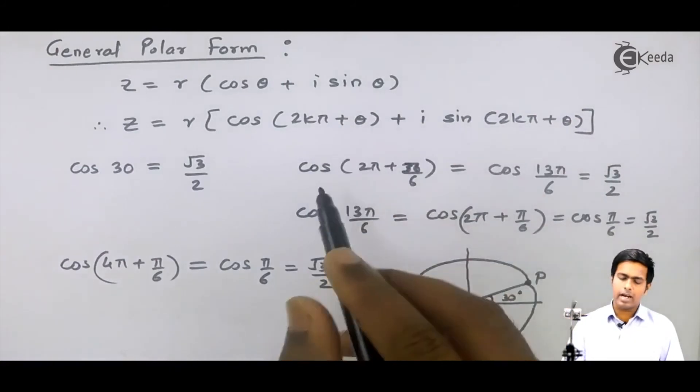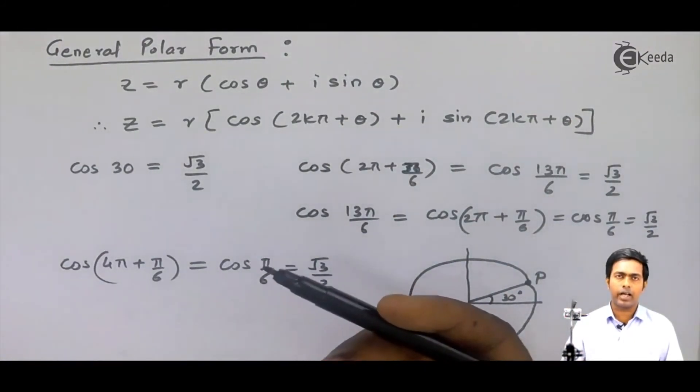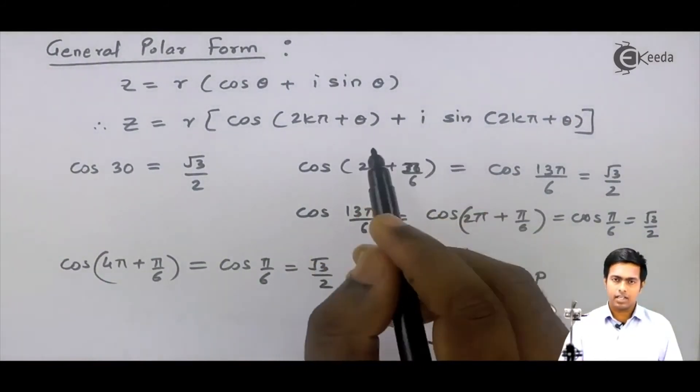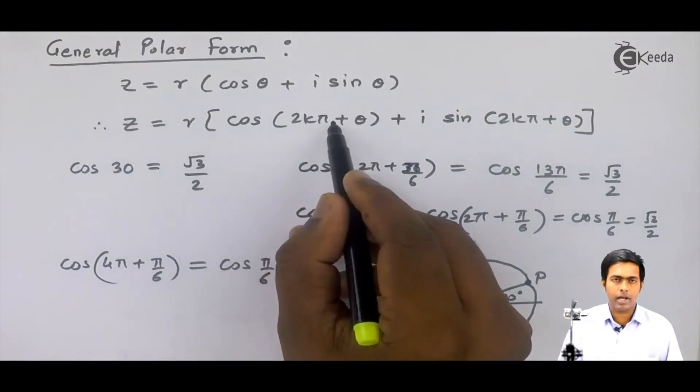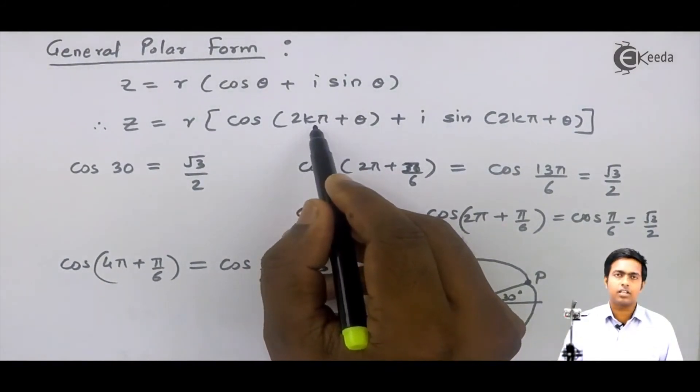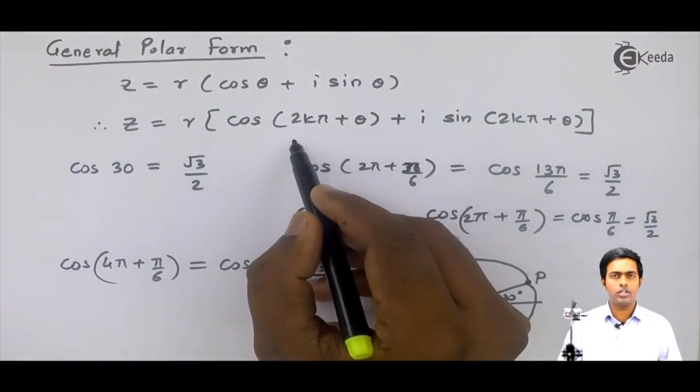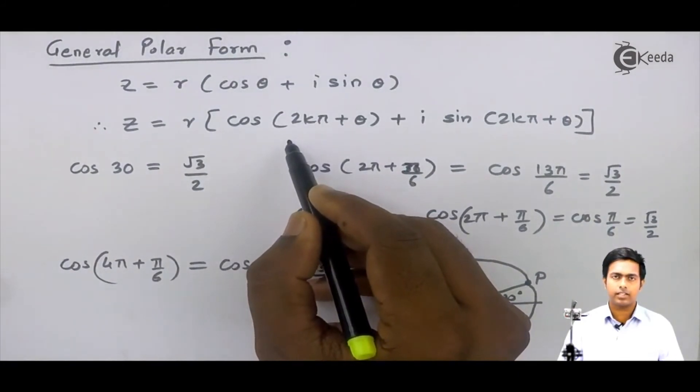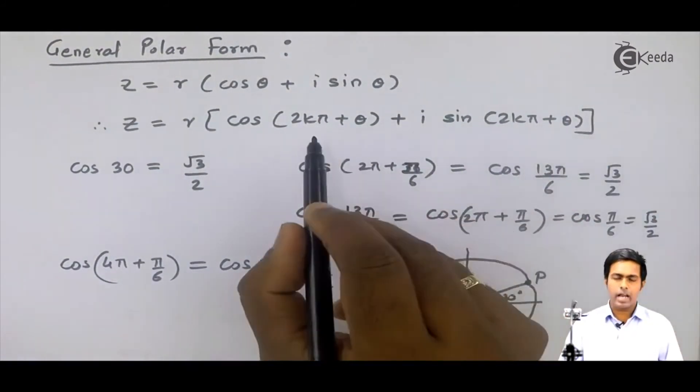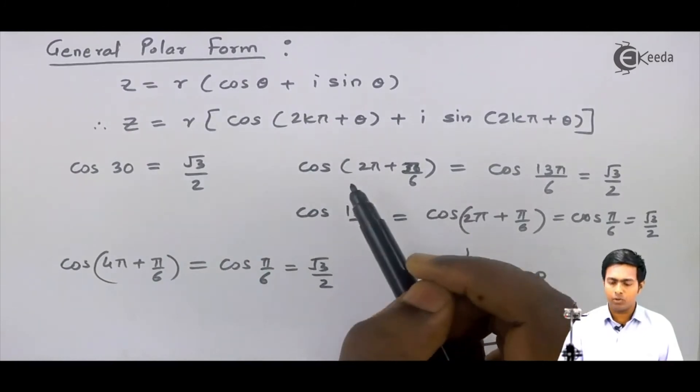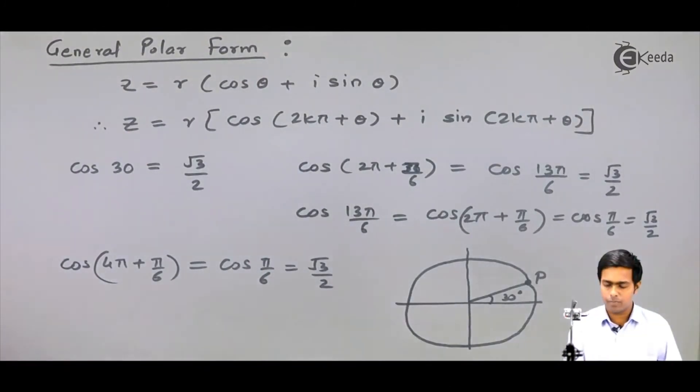So every time we get the same answer. General polar form we generally find out by adding multiples of 2π in the amplitude. Hence I have represented it as 2kπ, where k is an integer, so it can take values as 1, 2, 3, 4, 5, 6, and so on. By adding 2kπ in amplitude, we can get general polar form.